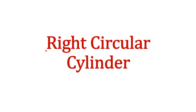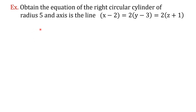Hello students, today we are going to solve an example on the right circular cylinder. From the given information, we will see how to obtain the equation of a right circular cylinder. Let us consider the example: obtain the equation of the right circular cylinder of radius 5 and whose axis is the line x minus 2 equal to 2 into y minus 3 equal to 2 into z plus 1.